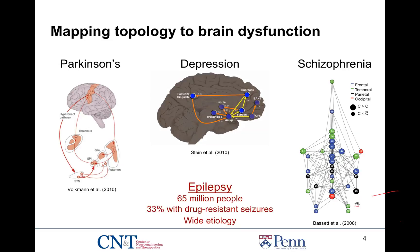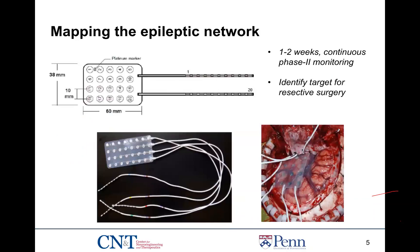Epilepsy affects 65 million people, a third of whom exhibit drug-resistant or pharmacoresistant seizures. Epilepsy has a very wide etiology — trauma, genetic predisposition, infection — all leading to this common starting point of recurring seizures. In this study, we'll be discussing neocortical onset drug-resistant epilepsy, which is quite difficult to treat and requires very invasive forms of mapping the epileptic network. Clinicians map the epileptic network in pharmacoresistant patients by implanting electrocorticography or ECoG arrays onto the surface of the brain.